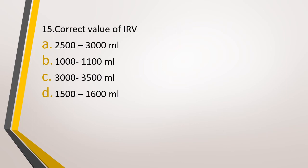Question number 15. The correct value of IRV, inspiratory reserve volume is. Option A: 2,500 to 3,000. Option B: 1,000 to 1,100 ml. Option C: 3,000 to 3,500 ml. Option D: 1,500 to 1,600 ml. What is the correct value of IRV? The correct answer is option A, that is 2,500 to 3,000 ml.